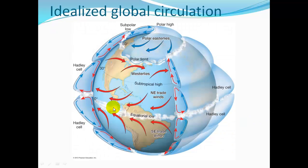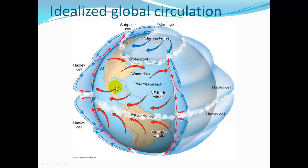Here we have our equatorial low where air warms up with lots of solar radiation heating it, causing it to rise, cool, and drop precipitation. Then the air follows the pressure gradient and sinks, forming our trade winds and westerly winds. Here are our southeast trade winds, northeast trade winds, westerly winds, and polar easterly winds and the polar front.